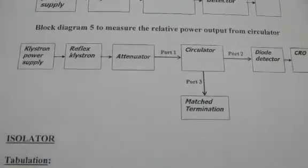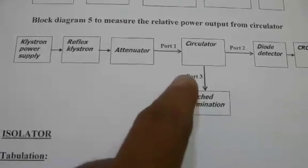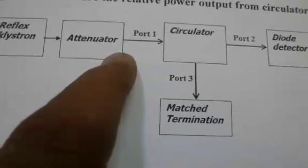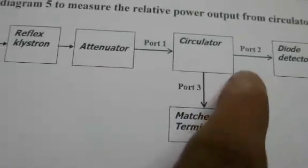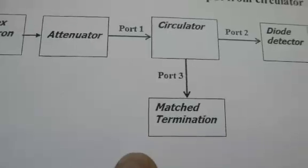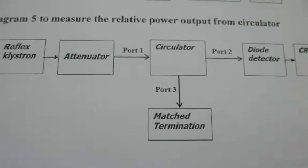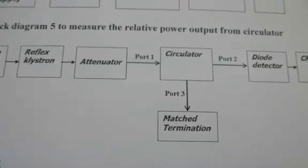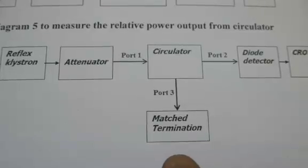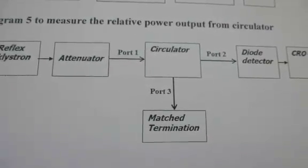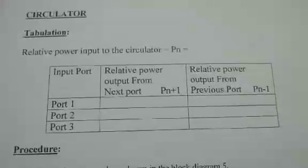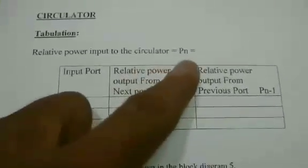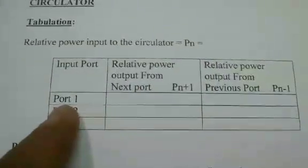Now instead of the isolator, the circulator is connected between the attenuator and the diode detector. The circulator is a three-port device, so port one is given the input, port two is used to see the output, and port three is match terminated. The third port should always be match terminated — we should not leave it open. The input power of three divisions is already noted.